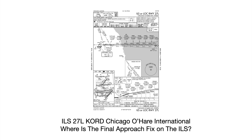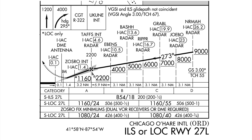Here's another example, and this is a good one because it gets a lot of people into trouble — there's something very specific about this. This one is Chicago O'Hare. Where is the Final Approach Fix on the ILS for runway 27 left at Chicago O'Hare? Zooming into the profile view — you guessed it — it is 2,200 feet. So 2,200 feet is the Final Approach Fix for the ILS localizer runway 27 left at Chicago.